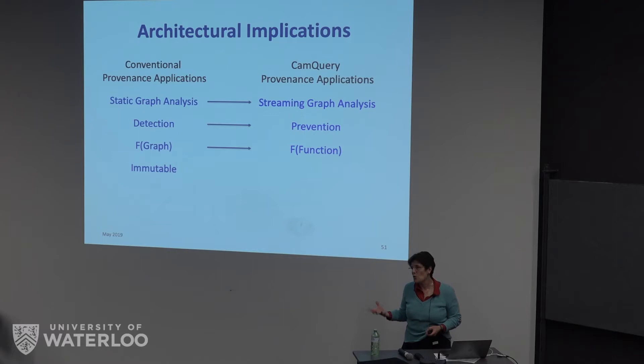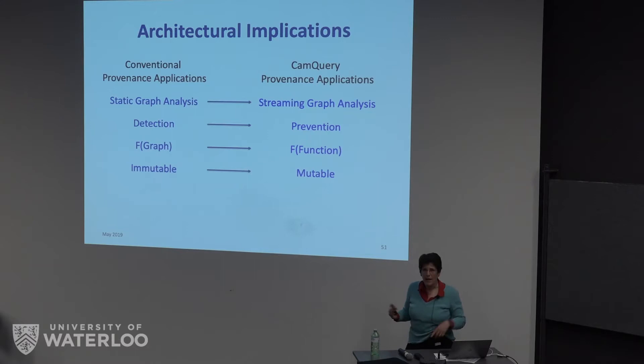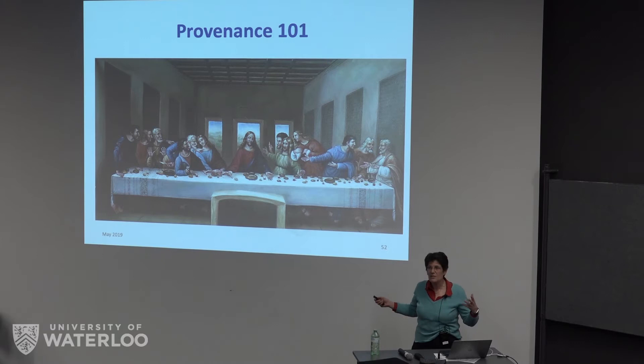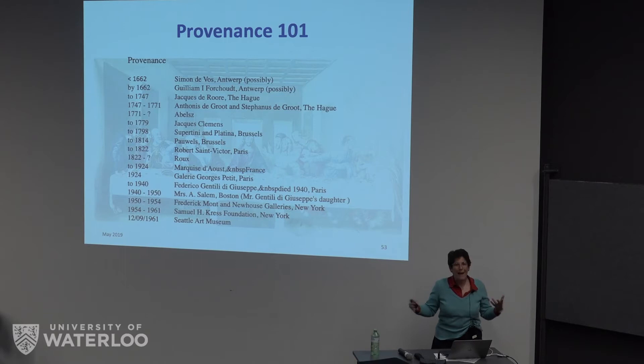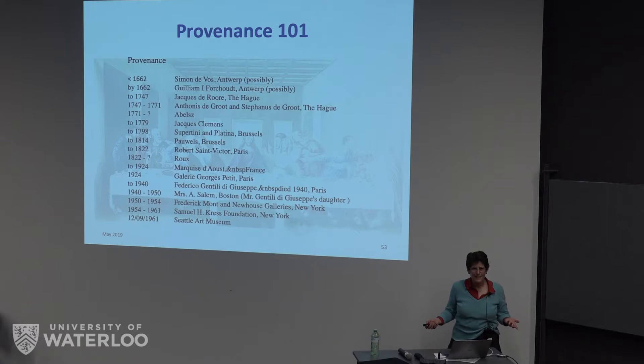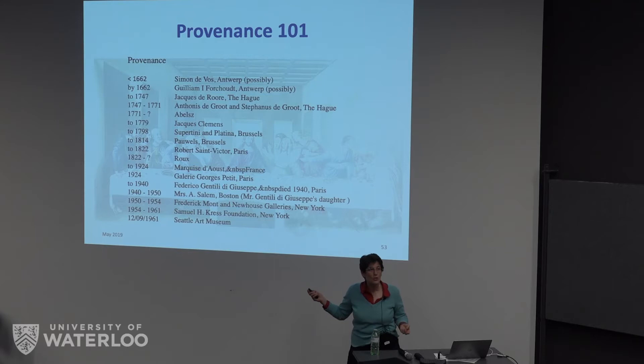If you do static analysis in a database, your analyses are often a function of the size of the graph, whereas ours are a function of the complexity of the analysis we want to do. So tasks that were taking way too long to be practically useful, we do in real time and can actually intervene in the system. And because we like to make our lives more challenging — if you're doing it after the fact, you have an immutable graph, but we have a mutable graph that we need to deal with. Two of these are an advantage and two are a disadvantage. Data provenance comes from the art world — it tells us where something came from. If you ever buy art, don't buy it unless you have the data provenance. Similarly, how many of you actually know where data comes from when somebody gives you a dataset? If you don't have the data provenance, don't trust it.